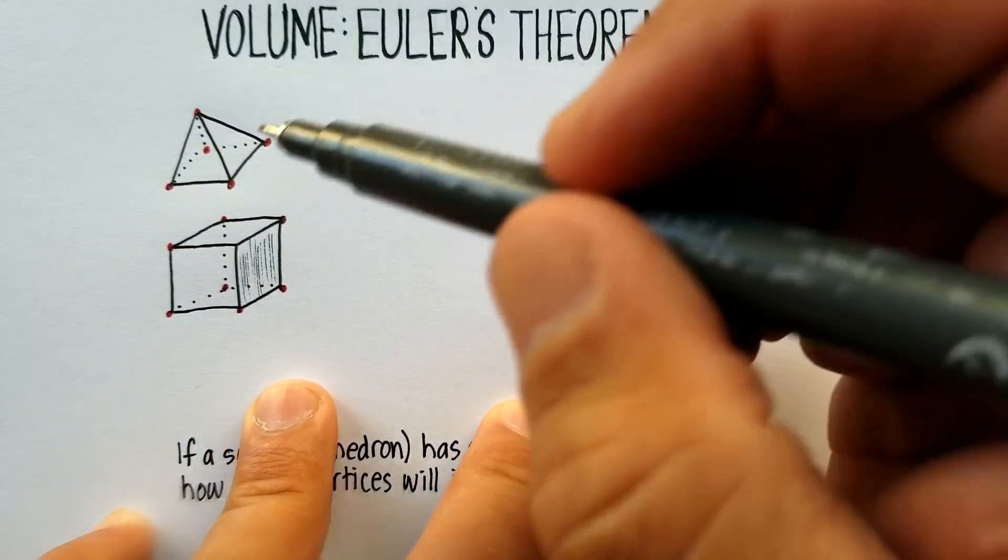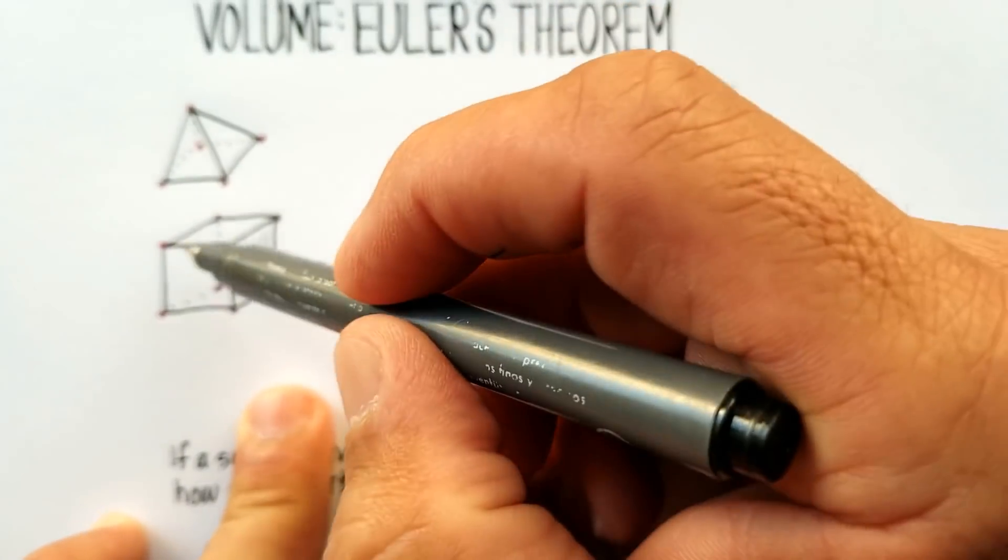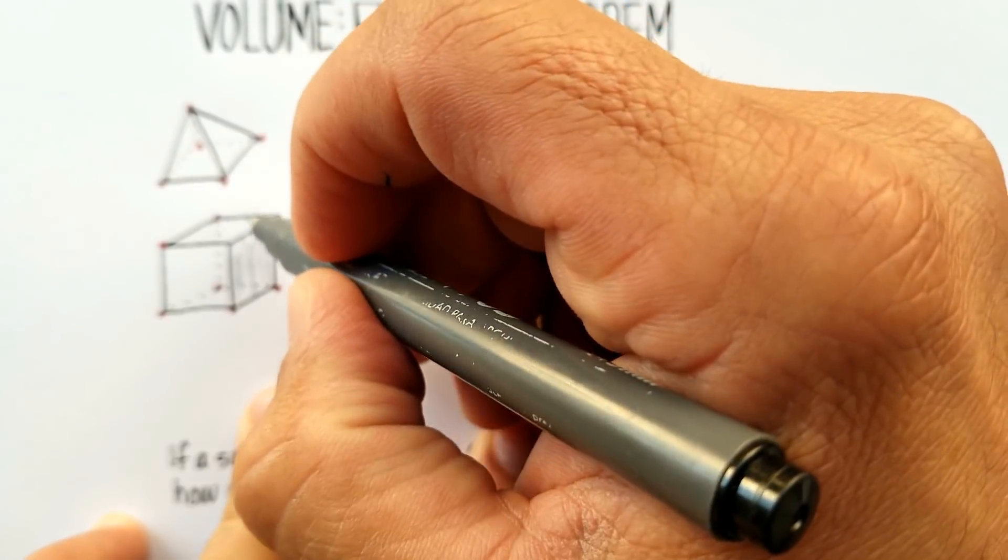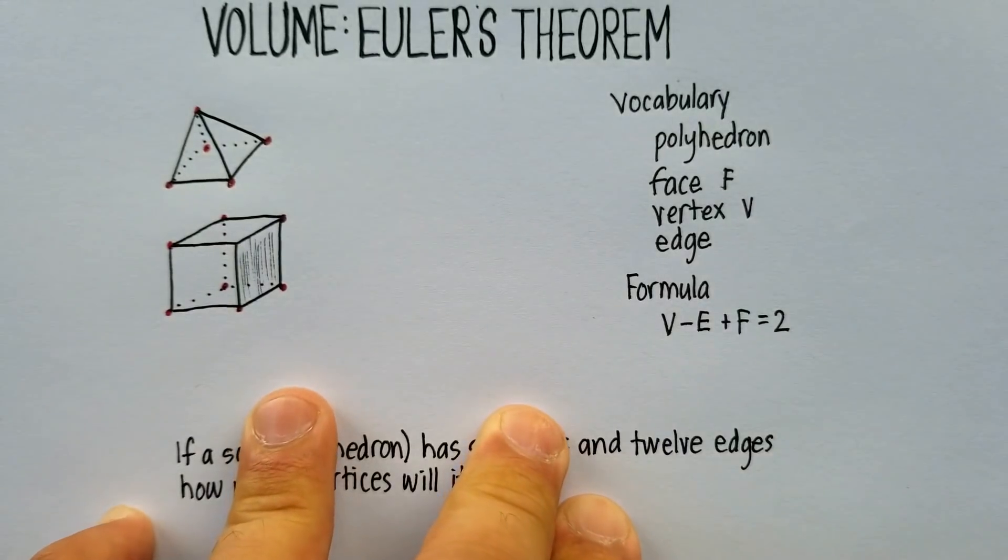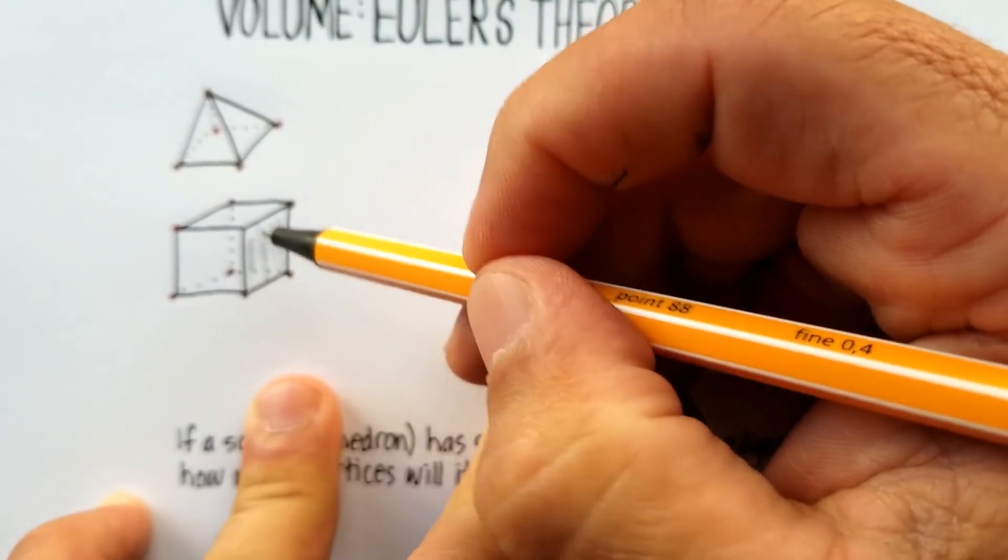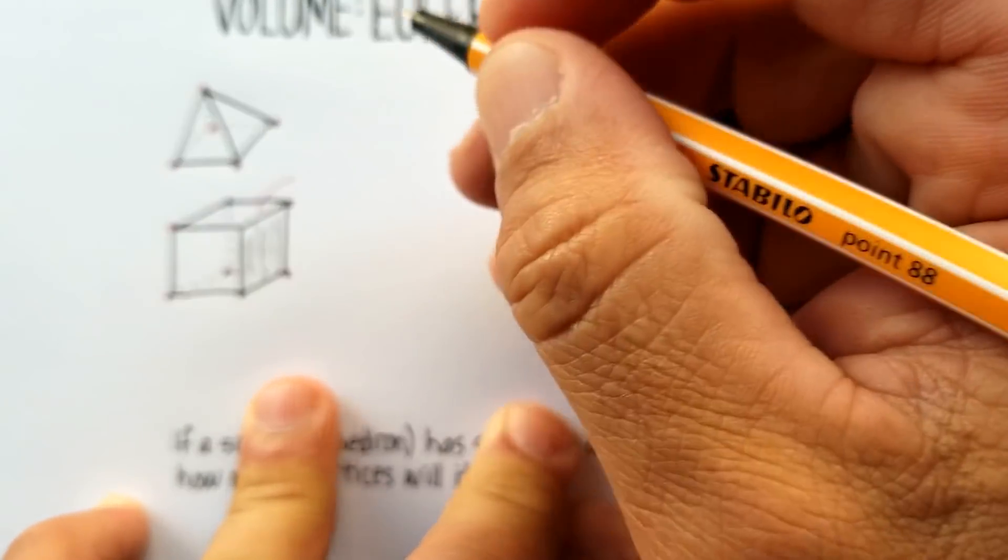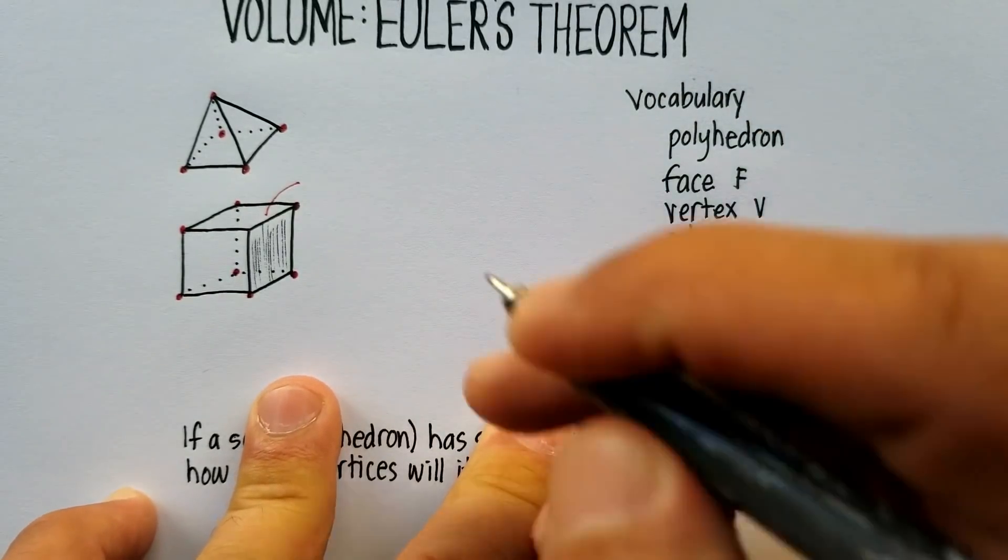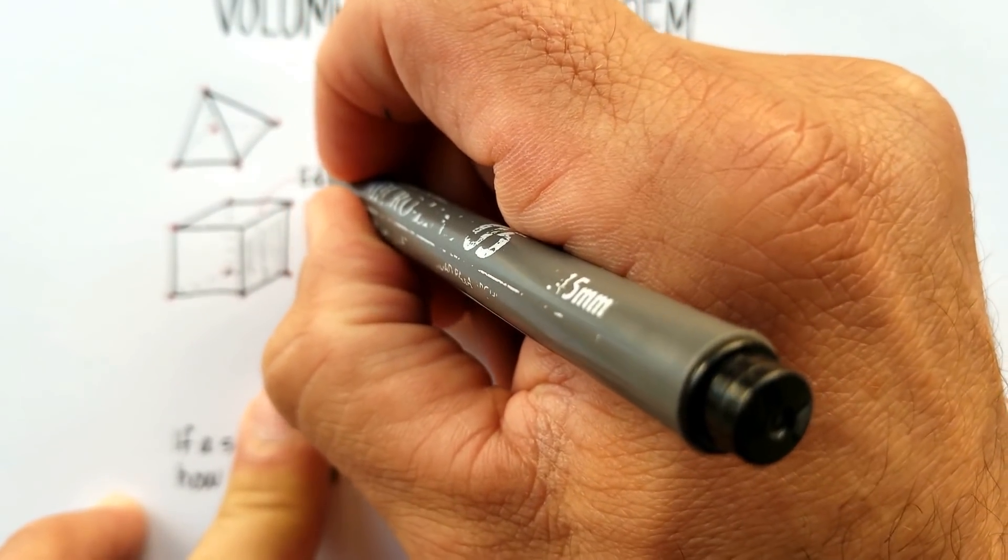Now, the edge is where two faces or two planes meet. So, for example, let's use a different color, where this face and this top face meet, would be called an edge. And again, that would be abbreviated as E.